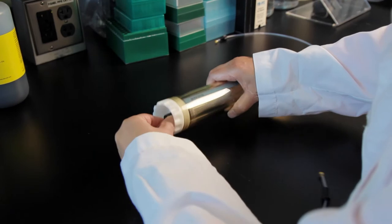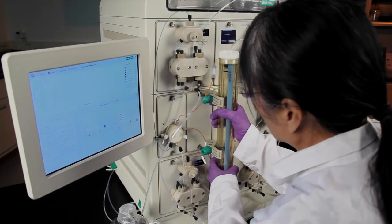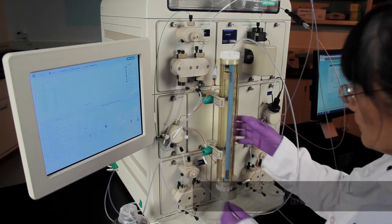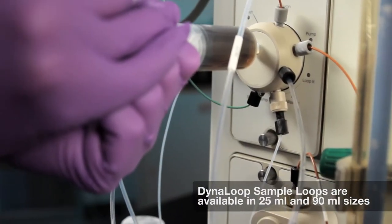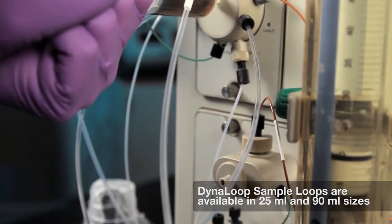Do you need to inject more than 10 mils of sample onto a column with your NGC? The Dyna Loop can make this possible. Dyna Loops are available in 25 and 90 mil sizes to easily accommodate your large volume loading needs.